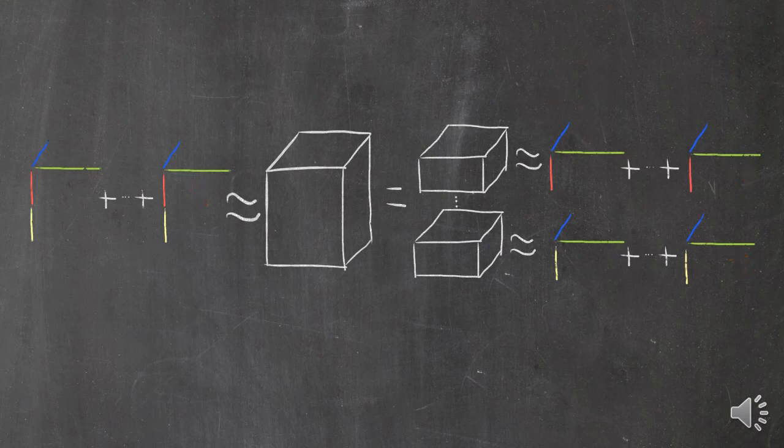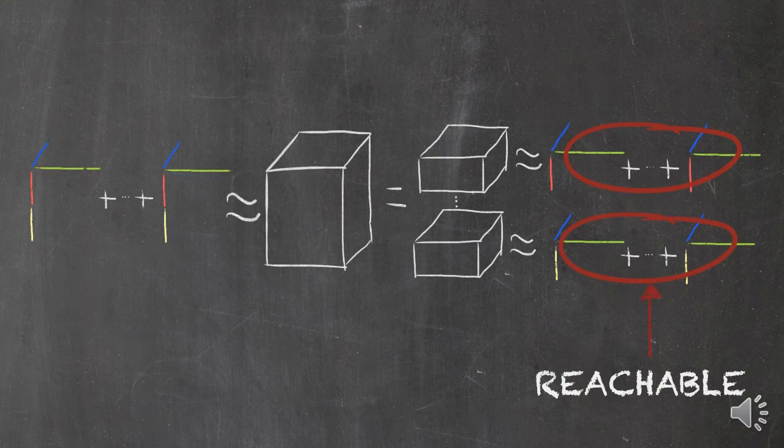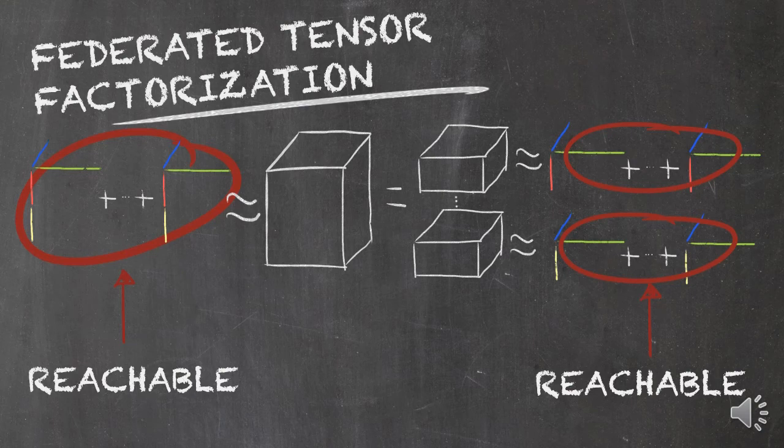Then, concatenating the two local tensor factorizations gives the global tensor factorization. We call this method federated tensor factorization.